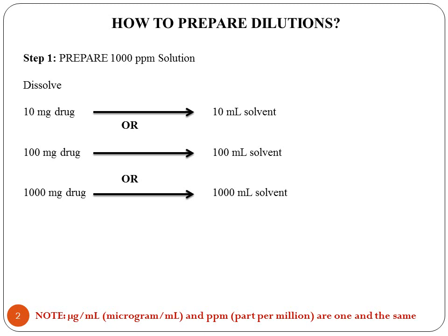In the first step, we have to prepare a 1000 ppm solution. To prepare a 1000 ppm drug solution, first dissolve 10 mg of drug into 10 ml of solvent. The drug and solvent chosen depend upon the solubility of your drug. The solvent in which your drug is completely soluble — like water, methanol, ethanol, or any buffer — can be preferred.